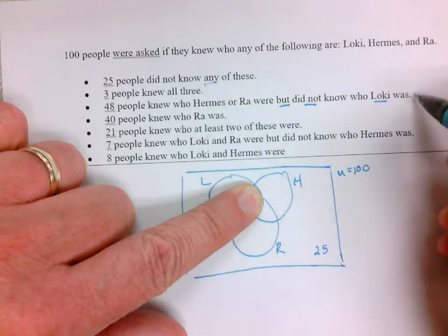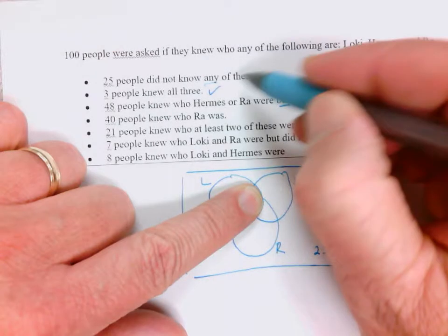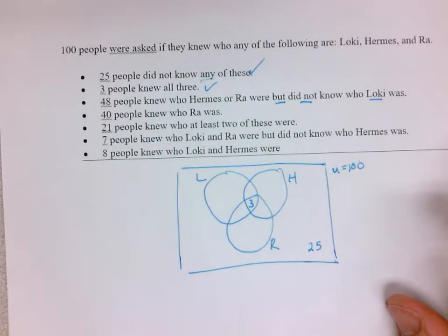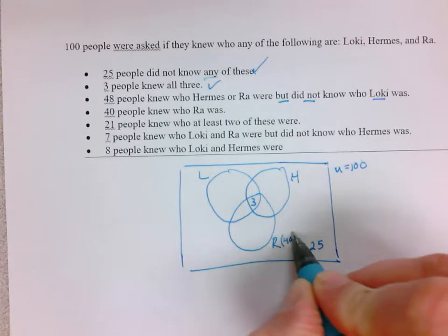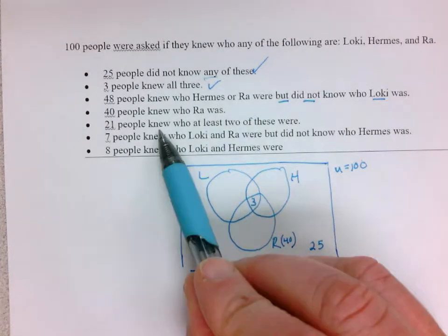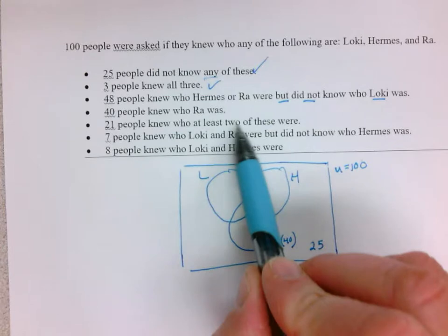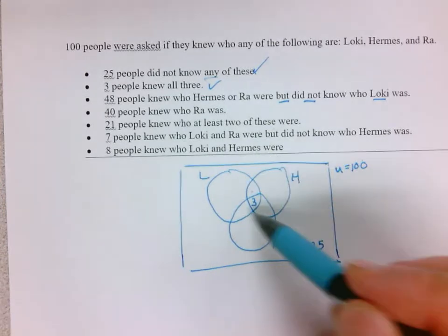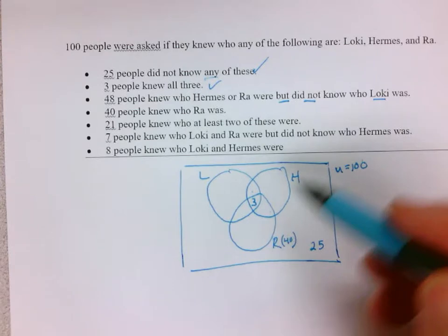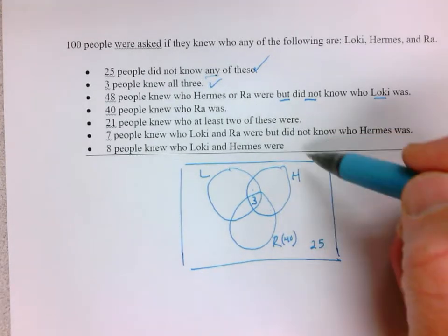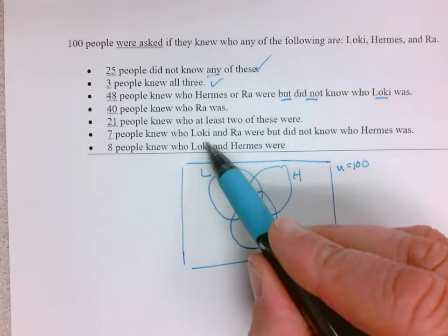40 people knew who Ra was, so that's just the big circle - 40. 21 people knew at least two of these. That's these four sections in here. I can't use it yet.